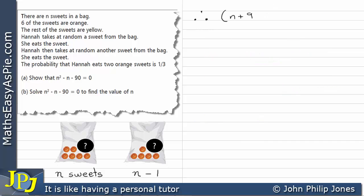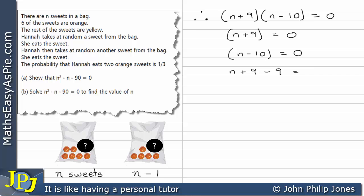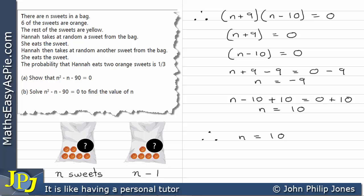Therefore (N + 9)(N − 10) = 0. There are two solutions: setting N plus 9 equals zero gives N equals minus 9; setting N minus 10 equals zero gives N equals 10. Only N equals 10 makes sense, because you can't have minus 9 sweets in a bag. Therefore the answer is N equals 10.